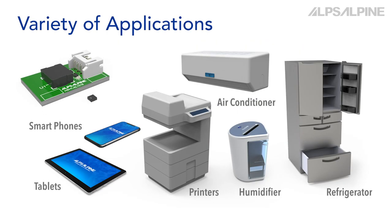A humidity sensor's function is naturally to measure the level of humidity, but humidity sensors are also used to detect ingress of moisture. Applications of the former include air conditioning systems and refrigerators, while uses of the latter are detection of moisture or ingress in printer paper feed mechanisms and waterproof equipment.